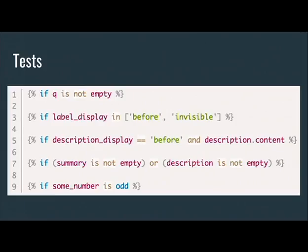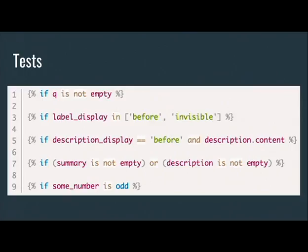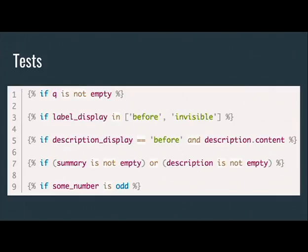Twig also has tests — checks of true or false used to construct logic. For example: if Q is not empty (meaning there's a query string set); if label_display is in one of two values in an array; if a variable equals something; if summary or description is not empty; if a number is odd. Technically, the only true Twig test here is the word 'odd'; the others — 'is', 'not', 'and', 'or' — are operators. But for practical purposes they act as tests because they produce a yes/no boolean value.